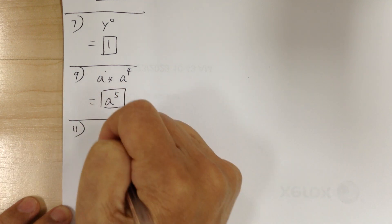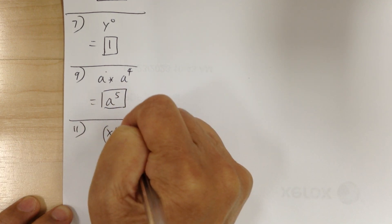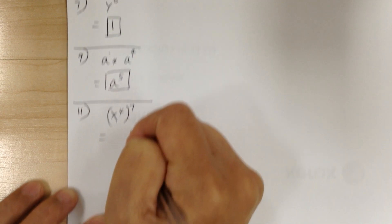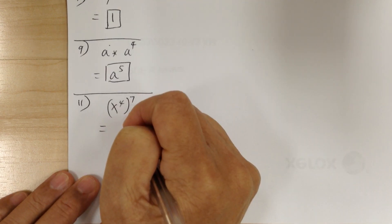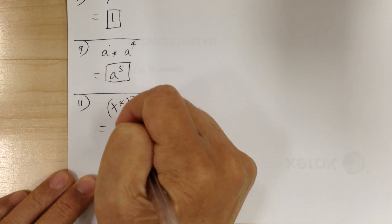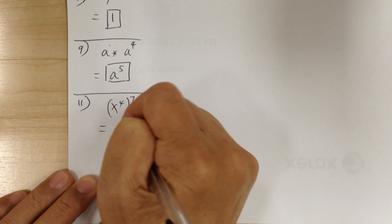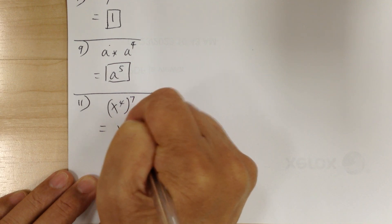Number 11, x to the 4 to the 7 power. You should use the power rule. So just multiply — it would be x to the 28 power.